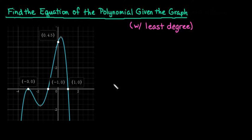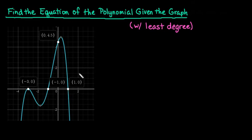For this video, I want to show you how to find the equation of a polynomial when you are given the graph and a point on the graph. We want to find this with the least degree, because it is possible to have two polynomials with different equations that have differing degrees but give you the same output. When given a graph, there are things you can look for to identify important characteristics of the polynomial.